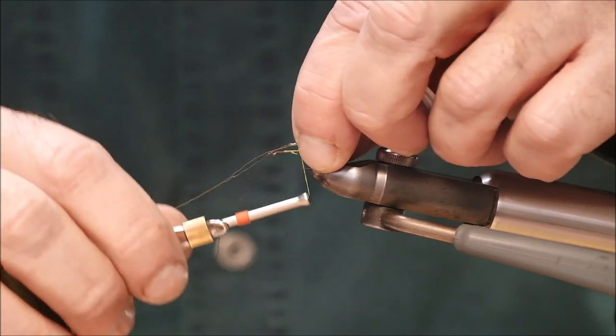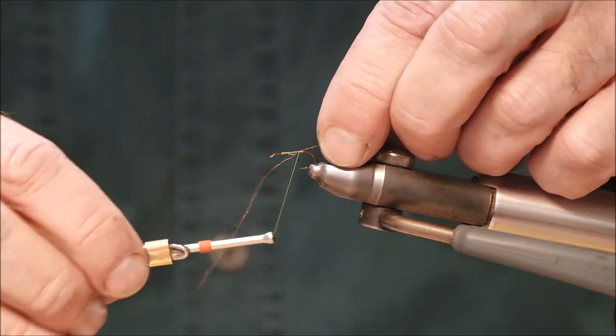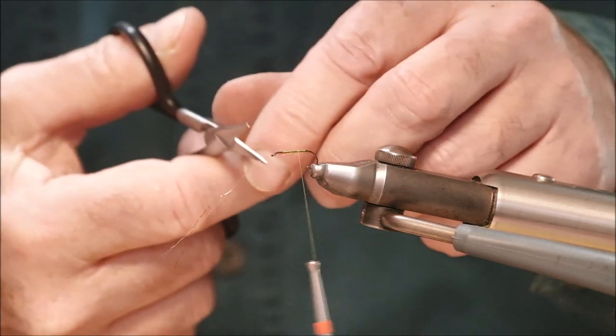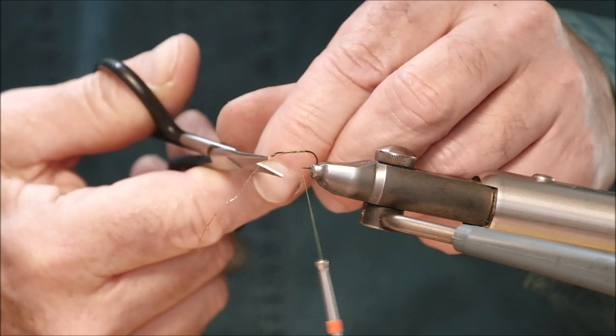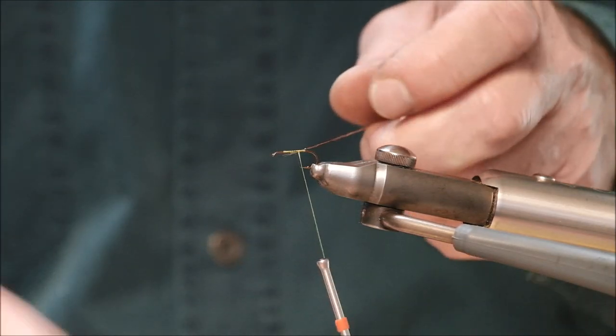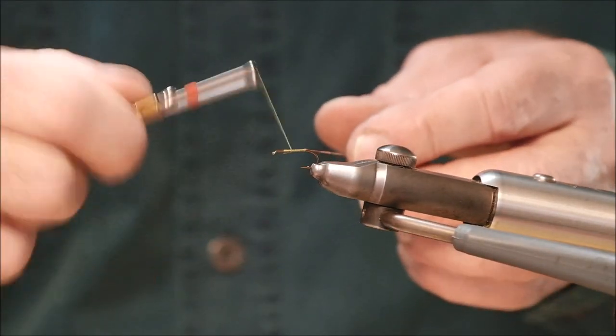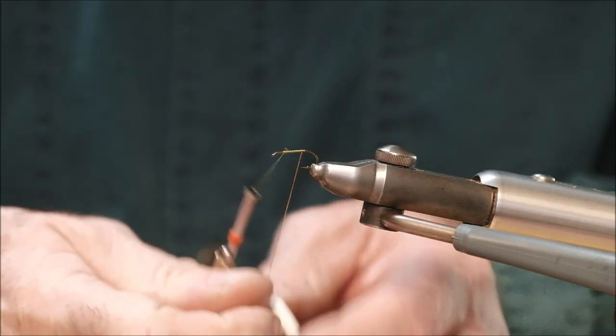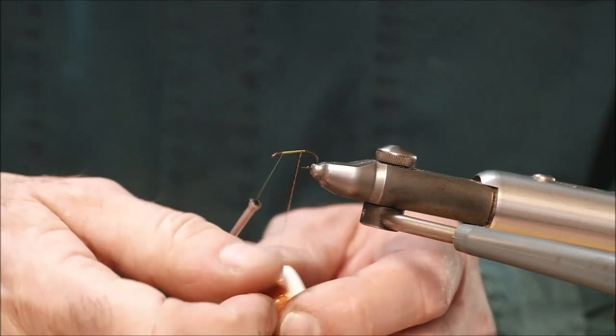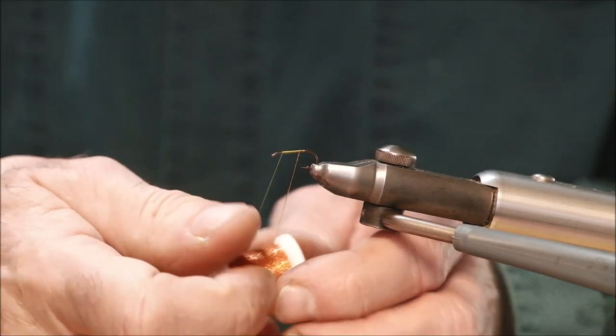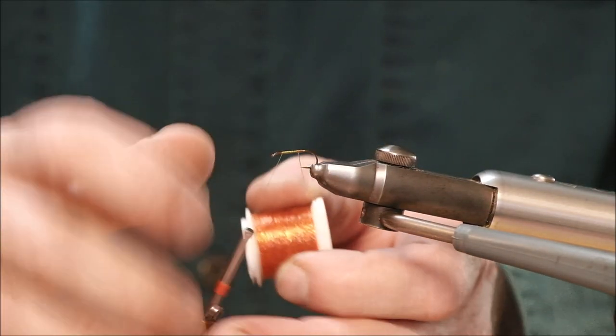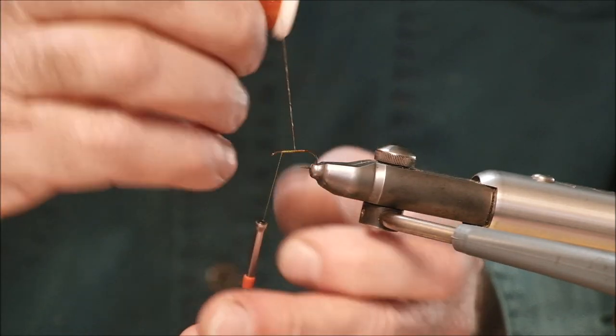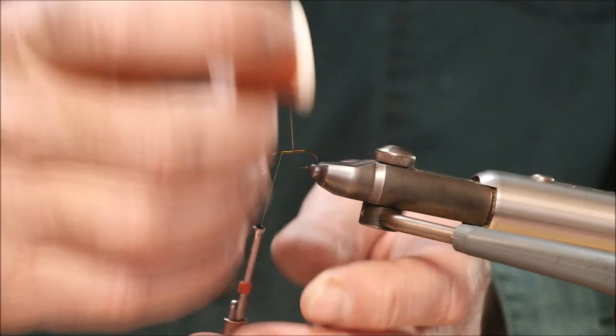When I want to tie quills, I use this stuff here. It's a body quill. I think it's made by Hends, H-E-N-D-S. It comes in a huge variety of colors and I find this stuff really good. Basically what it is, it's like plastic, but it creates a beautiful effect on the bodies of all types of flies. The color of the tying thread you use is important here because it can have an effect on the color of the body.